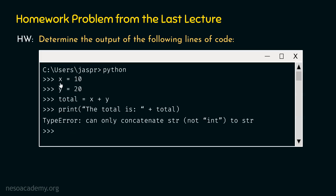Let's start from the first line: x equal to 10. This means variable x is pointing to the value 10 — a simple variable, completely legal in Python. Similarly, y is pointing to the value 20, also legal. Then total must point to the result of x plus y, which is 30, since x is 10 and y is 20. So total is pointing to value 30.